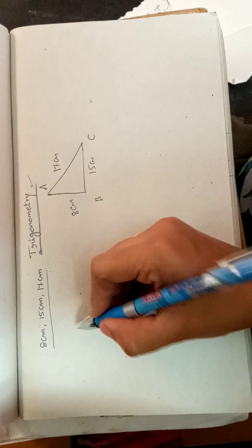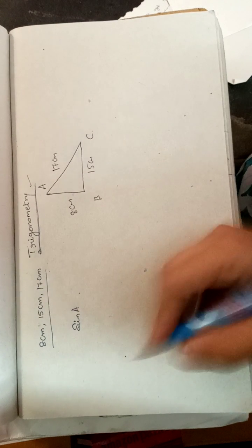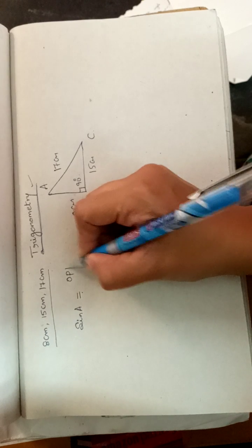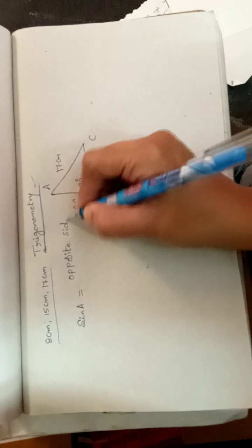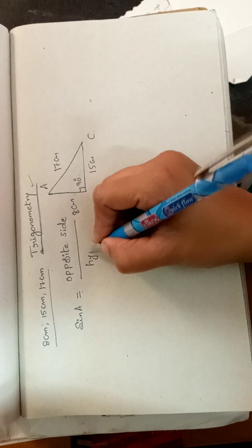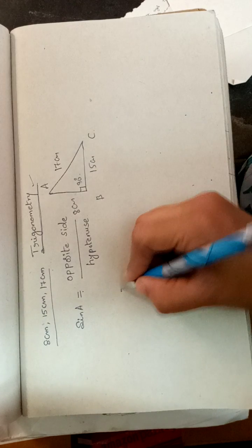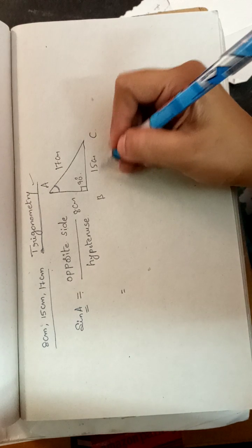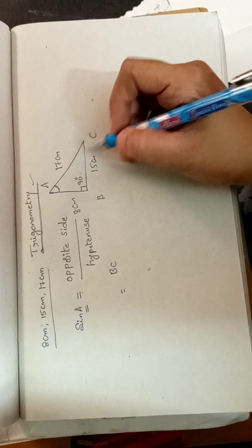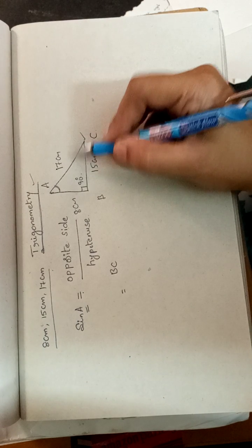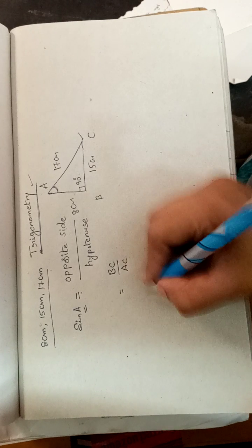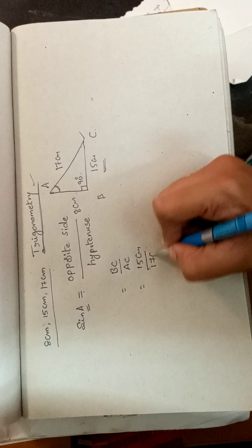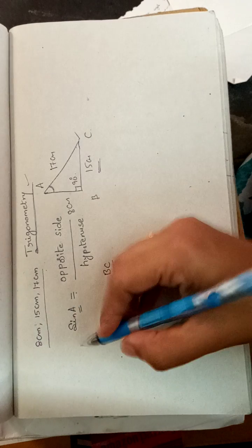We have to find the value of sin A. The angle at C is 90 degrees. The formula for sin A is opposite side by hypotenuse. For angle A, the opposite side is BC, which is 15 centimeters, and the hypotenuse is AC, which is 17 centimeters. So sin A equals 15 over 17.